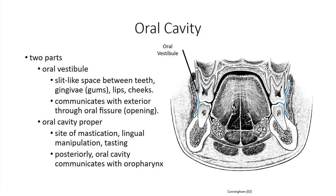The cheeks thicken anteriorly to form the lips. When the mouth is open, the space between the lips is known as the oral fissure, which separates the vestibule from the external environment. The oral cavity proper lies deep to the vestibule, deep to a semicircular fold formed by the teeth and gums, and contains the main contents of the oral cavity. It is continuous with the oropharynx posteriorly.